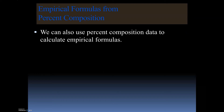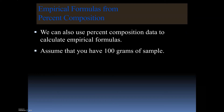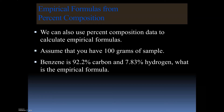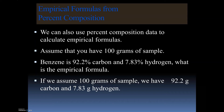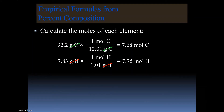We can also determine empirical formulas using percent composition data. Since percentages are out of 100, we assume a 100-gram sample. For example, with 92.2% carbon and 7.83% hydrogen, we now say we have 92.2 grams of carbon and 7.83 grams of hydrogen. Then, just like before, we convert grams to moles by dividing by the molar mass of each element.